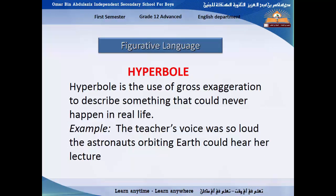Hyperbole is the use of gross exaggeration to describe something that could never happen in real life. For example, if I say 'I can eat an elephant,' it will never happen, but it means I'm very hungry. 'I can drink a river' means I'm very thirsty. So hyperbole means talking about impossible things. We can use this in writing a story to make it more exciting. For example: 'The teacher's voice was so loud, the astronaut orbiting Earth could hear her lecture.'